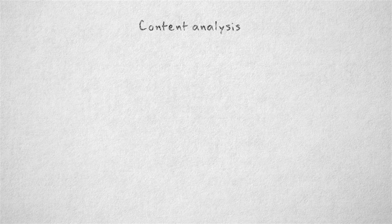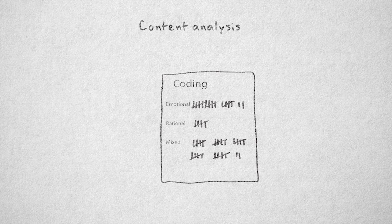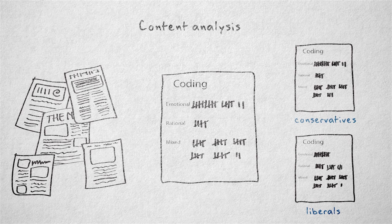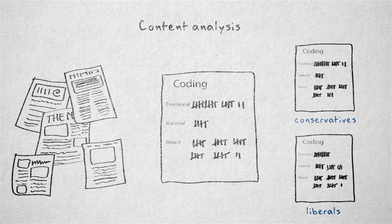Like observational measurement, content analysis consists of structured coding, but of elements in a text. The text can consist of newspaper articles, blogs, narratives, or transcriptions of interviews. Content analysis can be used, for example, to see if conservative and liberal politicians argue differently, by identifying the number of emotional and rational words they use in newspaper interviews. This is a simple example — text can be coded automatically according to very complex schemes using computer software.